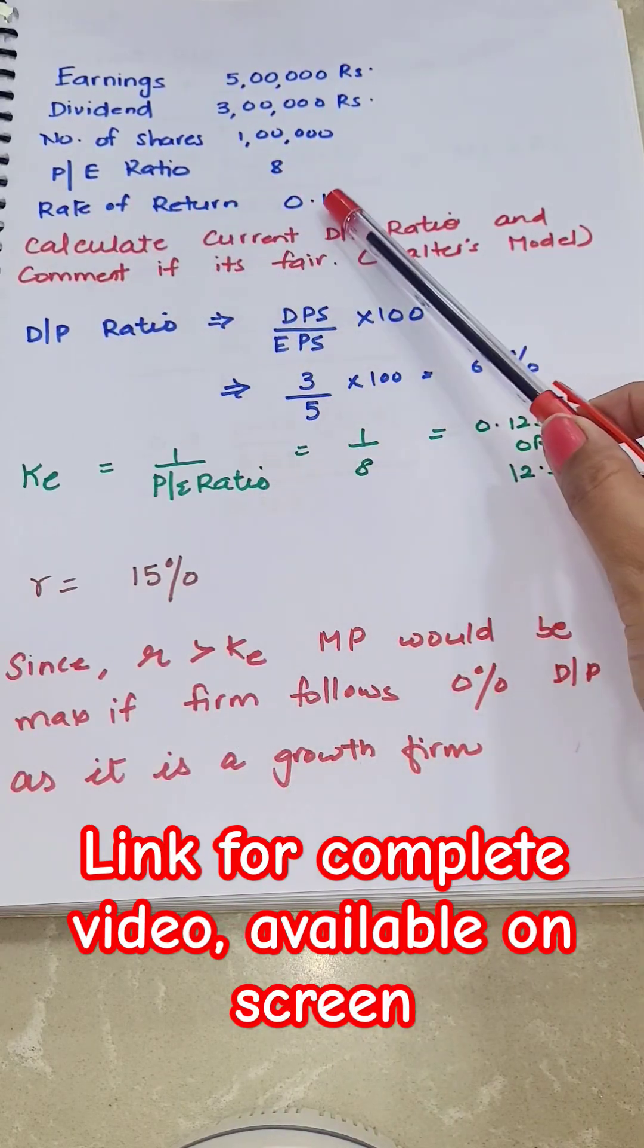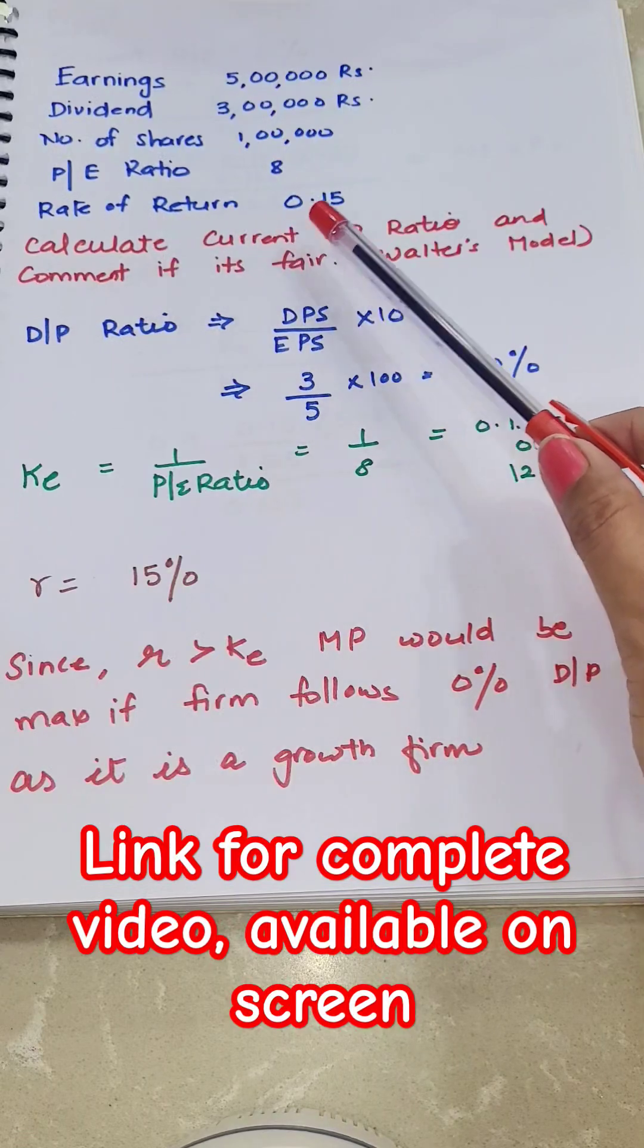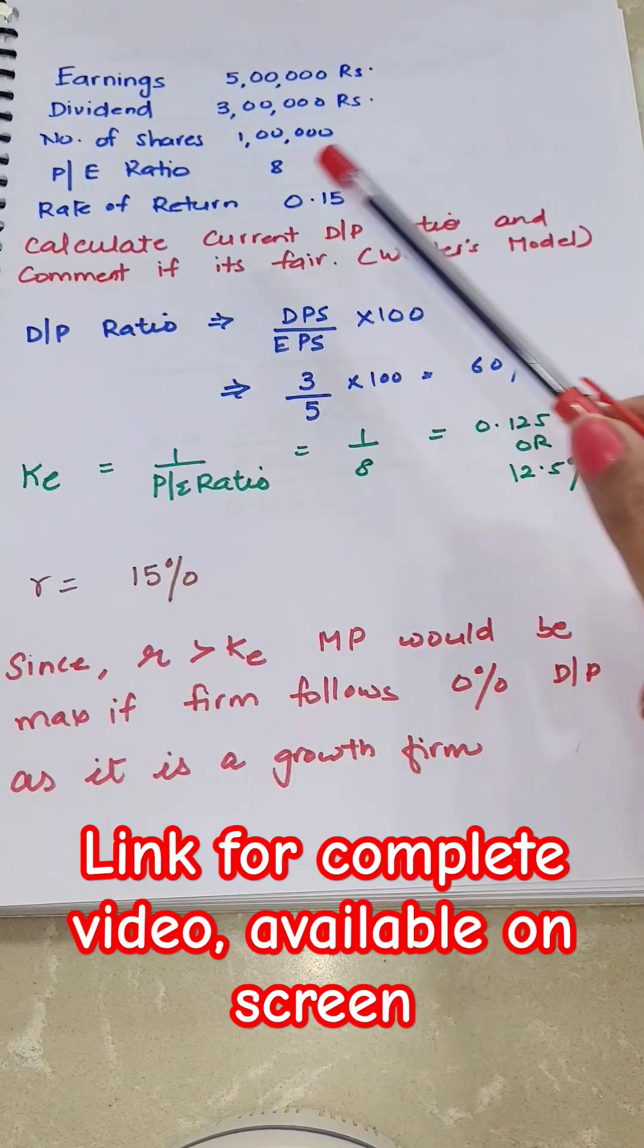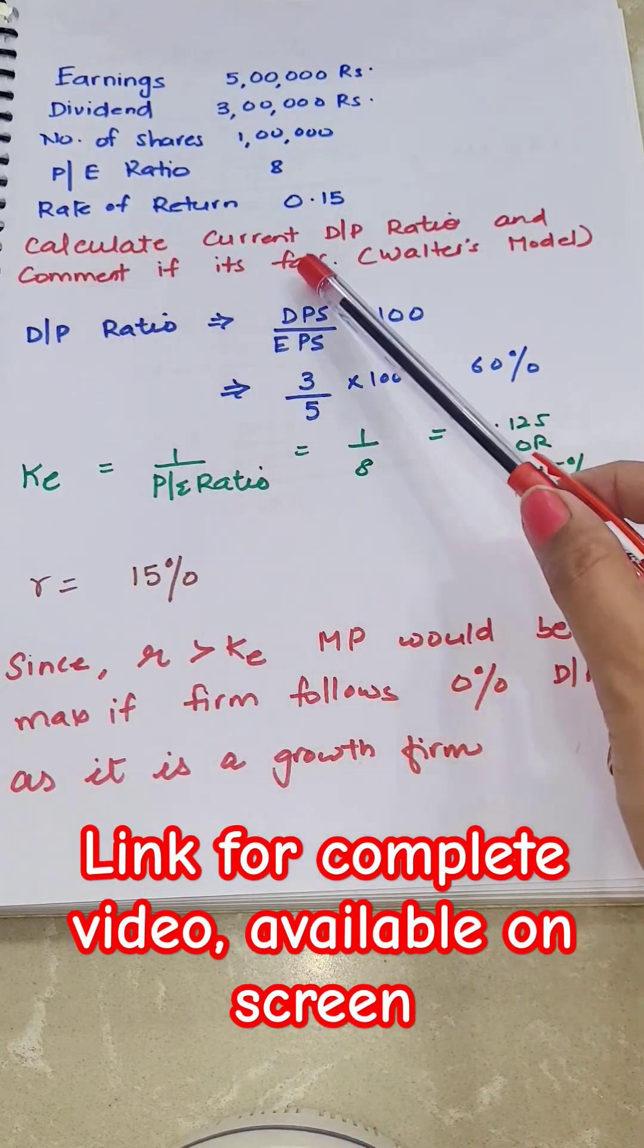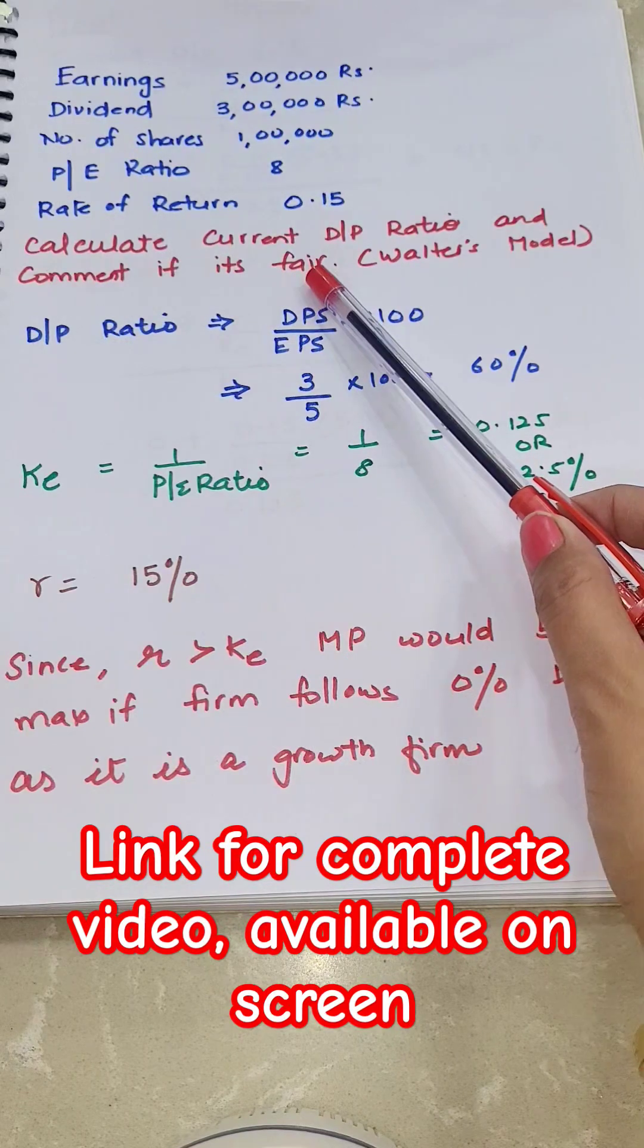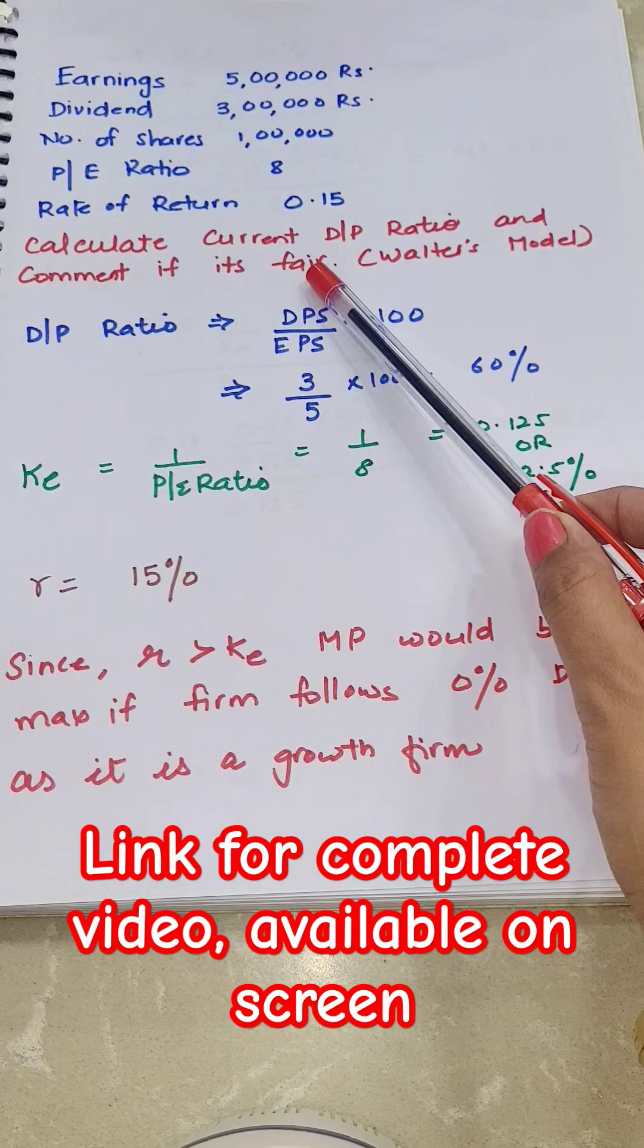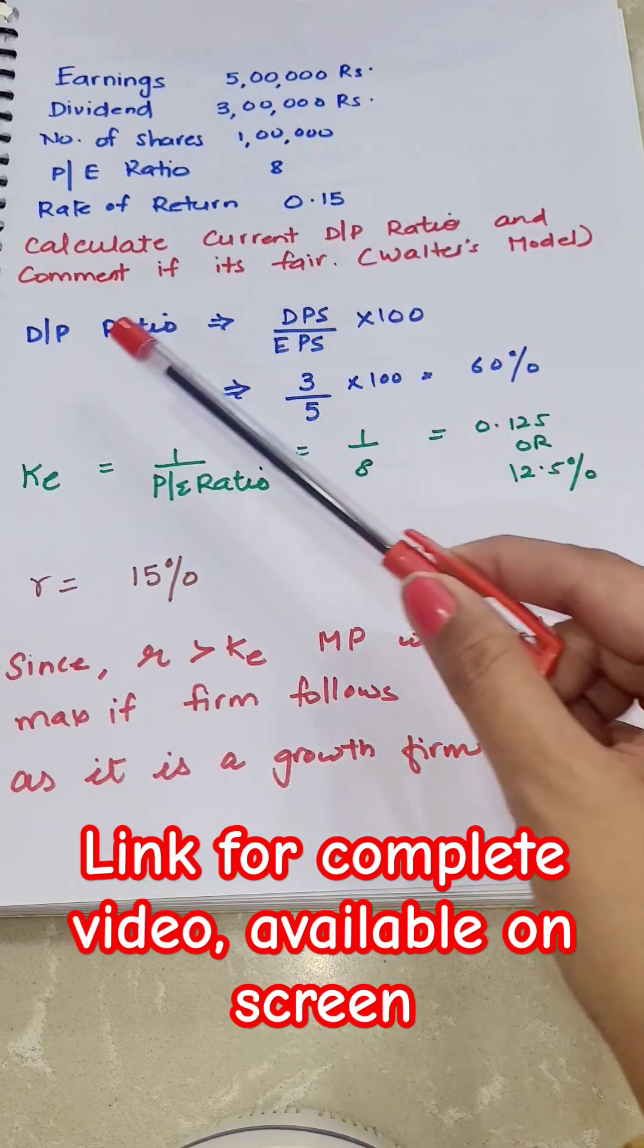rate of return is 15%. We have to calculate current DP ratio of the firm and we have to comment whether it is fair or not, and if it is not fair we have to suggest optimal ratio as well that should be adopted by the firm.